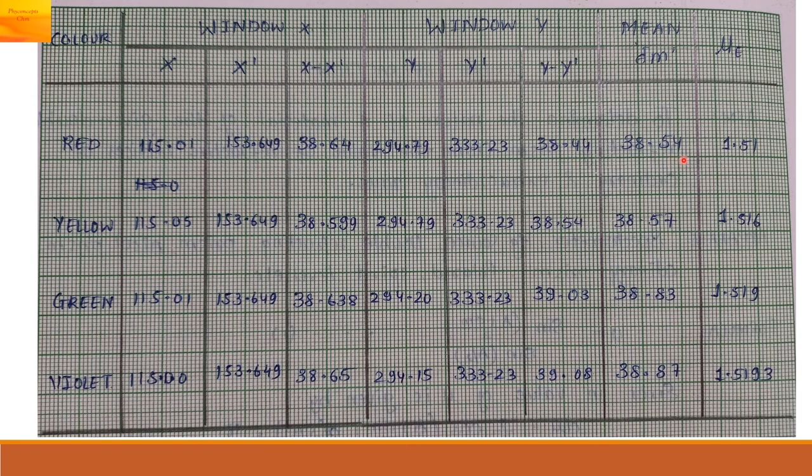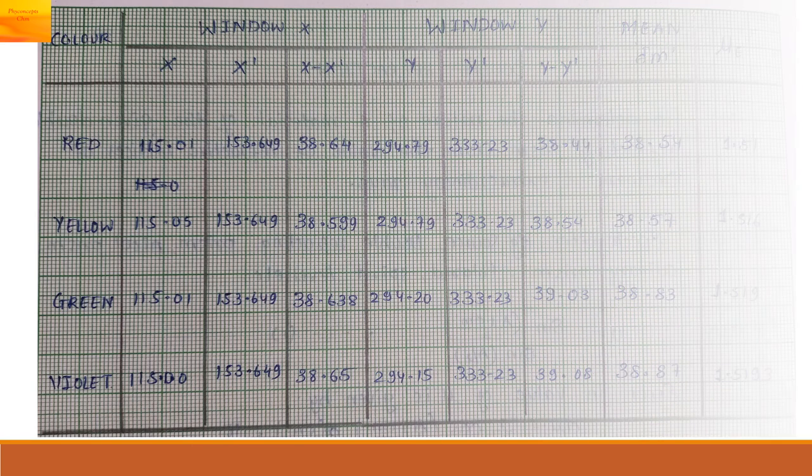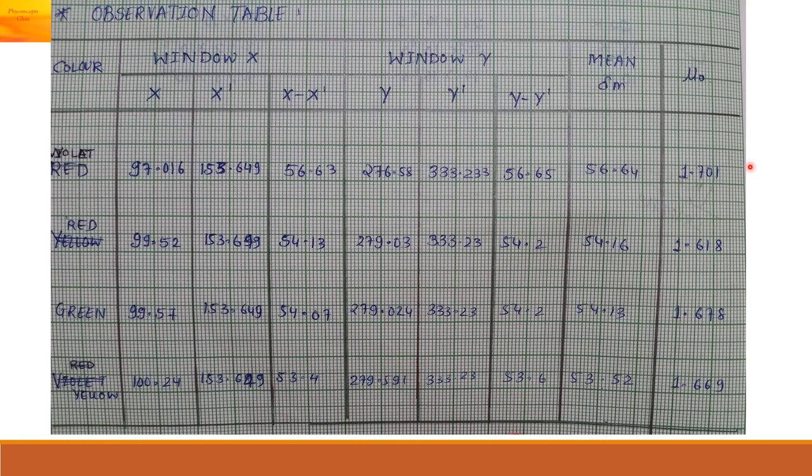Substitute it in the formula of refractive index. You will get the refractive index for that particular color. Same thing is done for the ordinary spectrum. Similar way, we take the readings for all the colors and we get the refractive indices for each color.